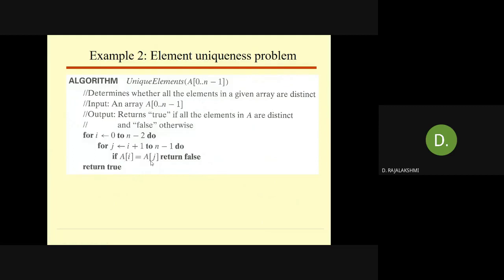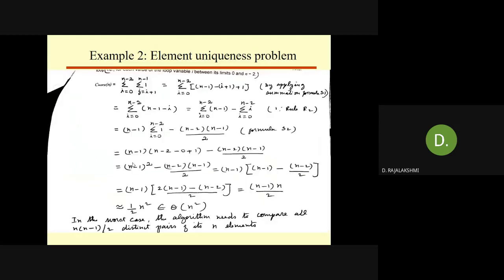We check whether the number of executions of the basic operation depends only on the input size or also on additional properties. It does depend on additional properties, so we must perform all three cases of analysis. Here, only the worst case analysis will be shown. Since the basic operation is inside two nested for loops, we use two summation operators to find the number of executions of the basic operation.